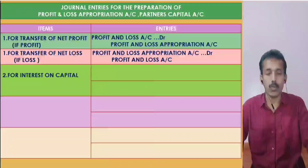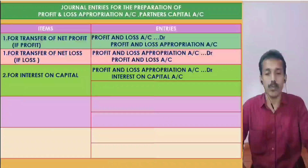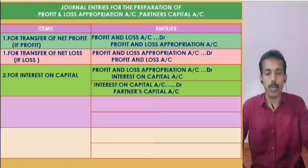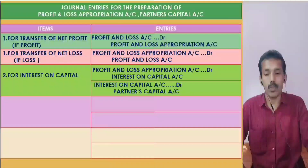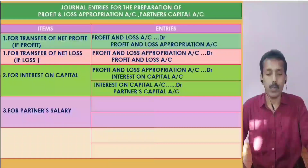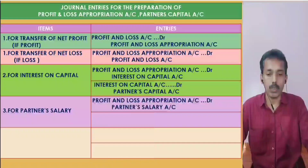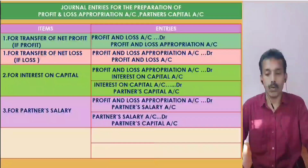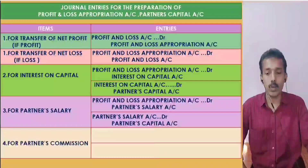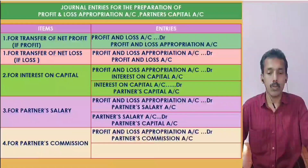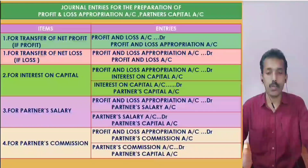For interest on capital: Profit and Loss Appropriation Account Dr., to Partners' Capital Account. For partner's salary: Profit and Loss Appropriation Account Dr., to Partners' Salary Account; then Partners' Salary Account Dr., to Partners' Capital Account. For partner's commission: Profit and Loss Appropriation Account Dr., to Partners' Commission Account; then Partners' Commission Account Dr., to Partners' Capital Account.